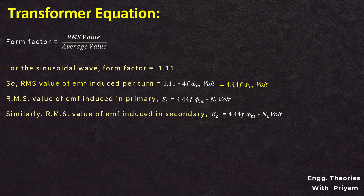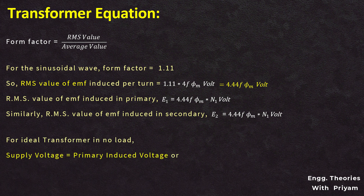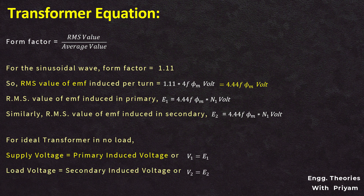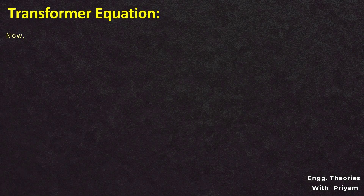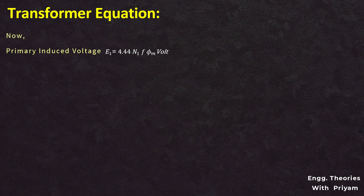For an ideal transformer at no load, the supply voltage equals the primary induced voltage, or V1 equals E1, and the load voltage or terminal voltage equals the secondary induced voltage, or V2 equals E2. So the primary induced voltage E1 equals 4.44N1Fφm volts, and the secondary induced voltage E2 equals 4.44N2Fφm volts.